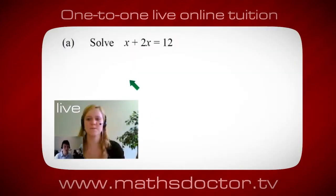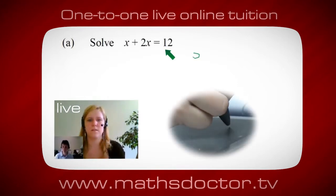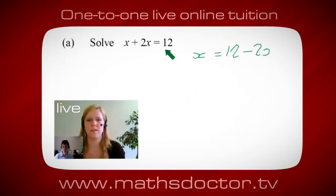Okay Marie, let's have a look at this one. Solve x plus 2x equals 12. What do you think you do first? Well, I want x on its own, so I would put x equals 12 minus 2x.